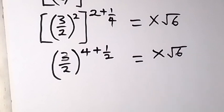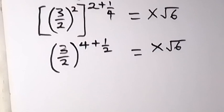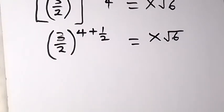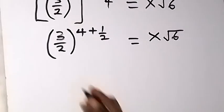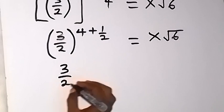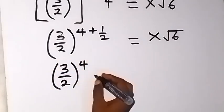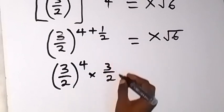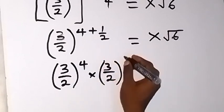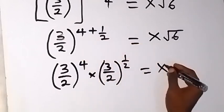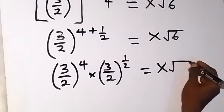And also from here, we can apply the law of indices as well. We can break this down into two numbers with base 3 over 2. So we have 3 over 2 raised to power 4, then times 3 over 2 raised to power half. That's what this means. Then equals x root 6.